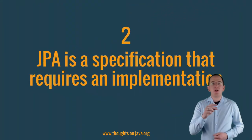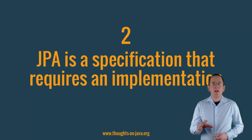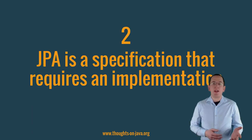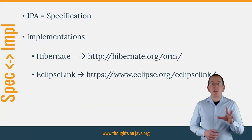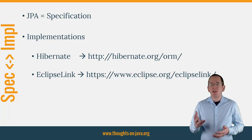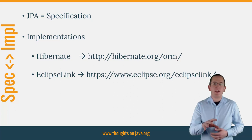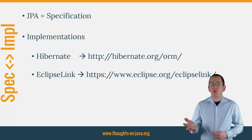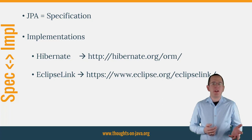The second thing you need to know is that JPA is a specification that requires an implementation at runtime. This is probably one of the confusing things if you've never worked with JPA or any other Jakarta EE specification. JPA only defines a set of interfaces and their functionality. That means that you can use it to implement your application, but you can't execute your application without adding a JPA implementation. Two well-known JPA implementations are EclipseLink, which is the reference implementation, and Hibernate, which is the most popular JPA implementation.